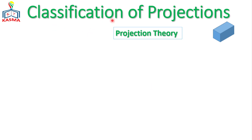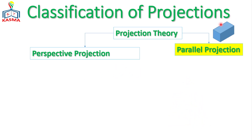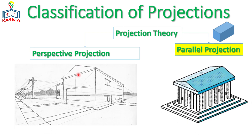In this video I'll give basic information related to the classifications of projections. In projection theory we have two classifications: perspective projection and parallel projection. A projection is when we try to sketch 3D objects into a 2D medium — for example, if you want to construct a home, a road, or any 3D object onto a plane like paper.